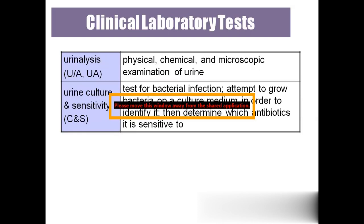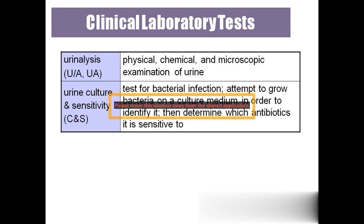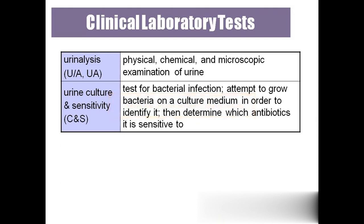Urinalysis: a urine sample is collected and examined for color, odor, and any abnormalities such as sodium, potassium, water content, pus cells, epithelial cells, and blood cells — a physical, chemical, and microscopic examination. Urine culture and sensitivity: if the person has a UTI, the urine sample is sent to the lab to identify the type of bacteria causing the infection, and antibiotics are prescribed accordingly.